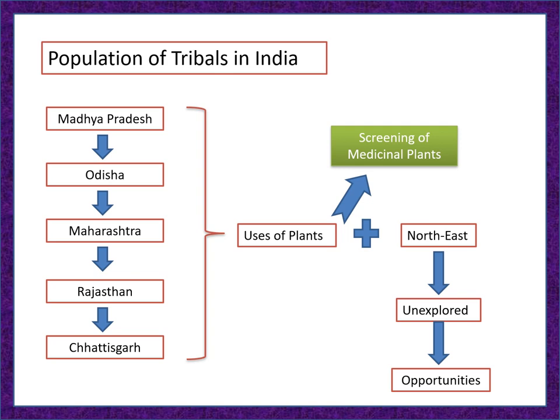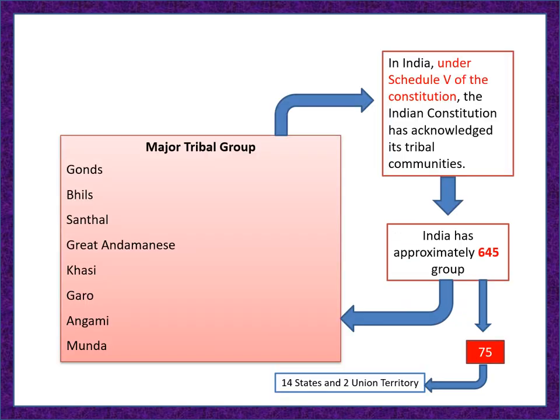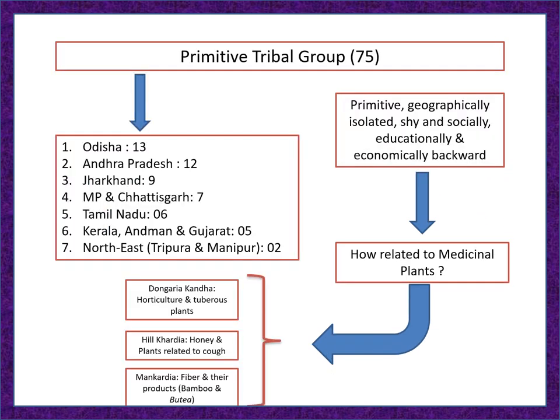In Northeast India, tribes are particularly unexplored, so there is a lot of opportunity there. The major tribal groups include the Gond, Bhil, Santhal, Great Andamanese, Khasi, Garo, Angami, and Munda. India has approximately 645 tribal groups, and among these, 75 belong to the Primitive Tribal Group (PTG).